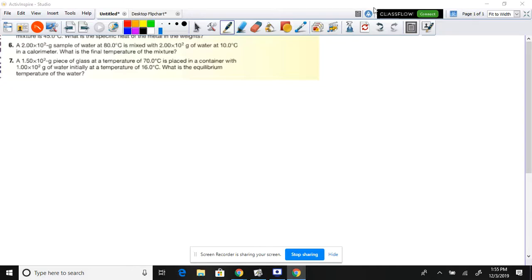Temperature changes with heat energy. When you put a hot object and a cold object together, you have to use Q equals mc delta t twice.